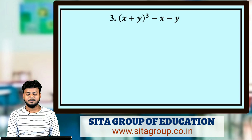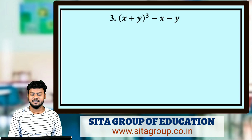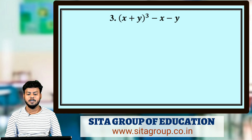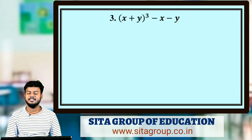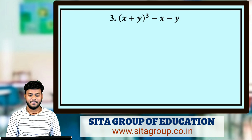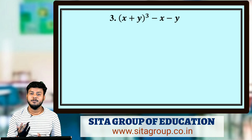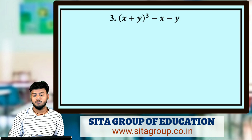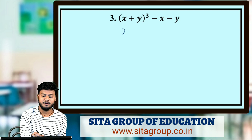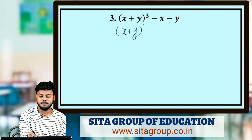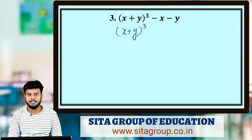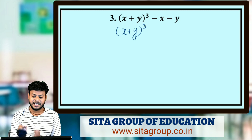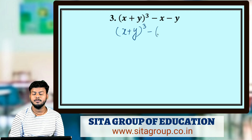Question number 3: factorize (x + y)³ - (x - y)³. At first glance you might think to apply the (a + b)³ formula, but no. First, look at the second term: minus (x - y). Take minus as common.